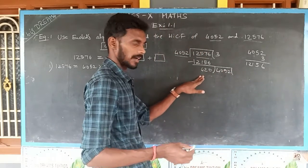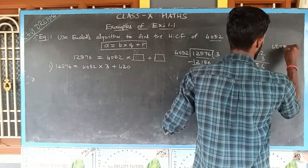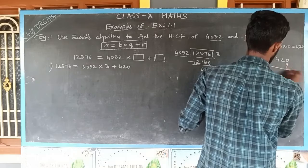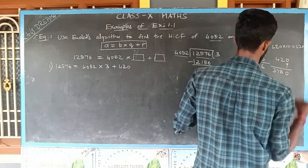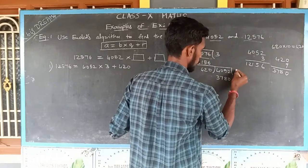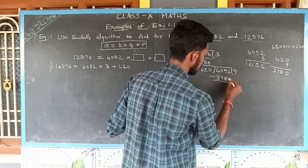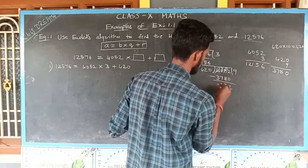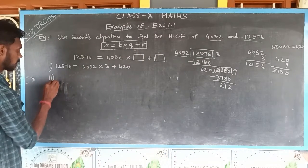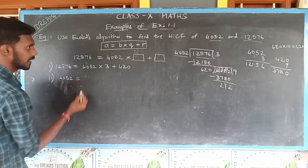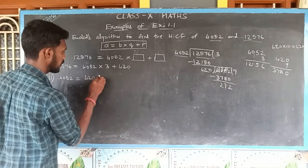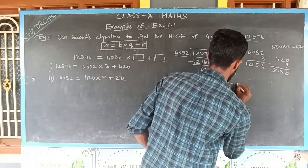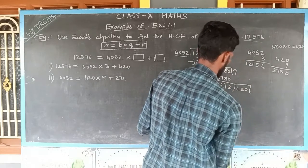We have to divide 4052 by 420. 420 × 10 = 4200, which is greater than 4052, so I try 420 × 9 = 3780. The quotient is 9. Subtracting, I am getting 272 as the remainder. So 4052 = 420 × 9 + 272. Here 272 becomes the new divisor and 420 becomes the dividend.